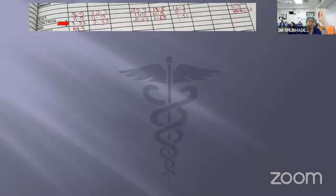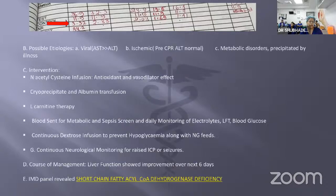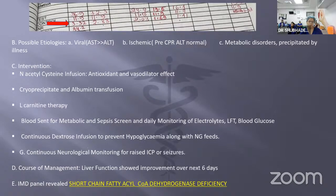INR was around 3.32. Thinking about possible etiologies: it could be viral since AST was much greater than ALT, ischemic given the 20-minute cardiac arrest downtime, or a metabolic disorder precipitated by the illness.